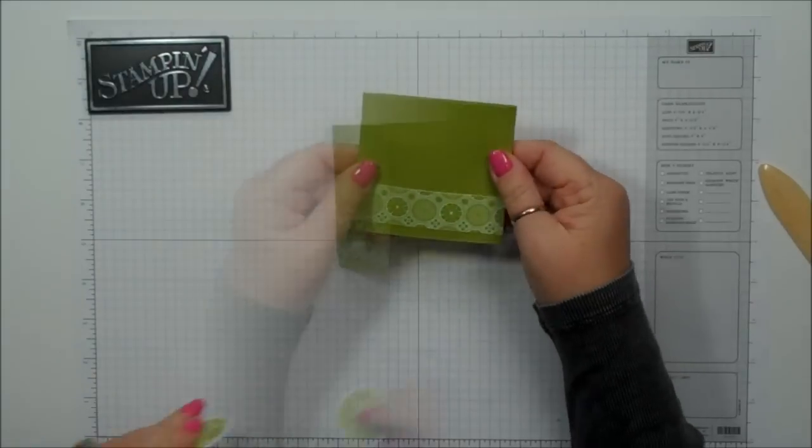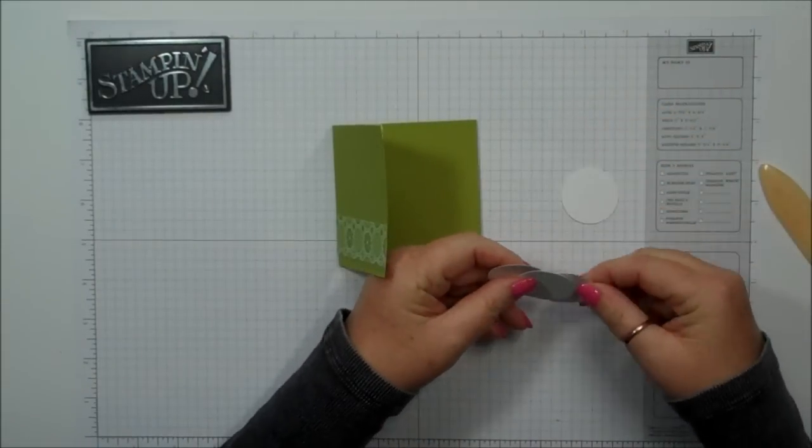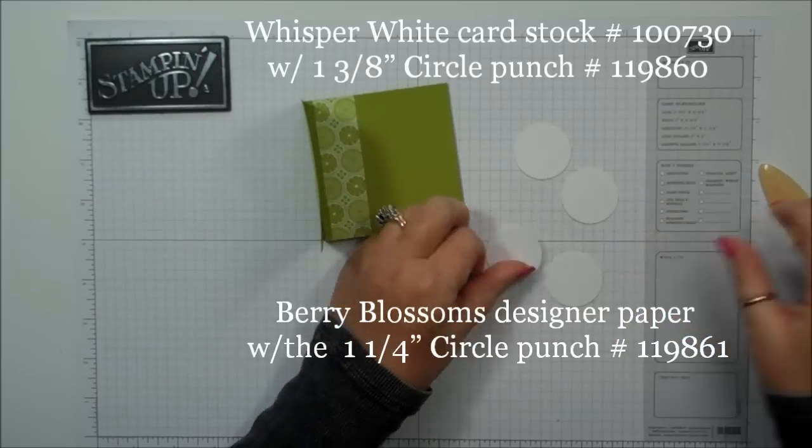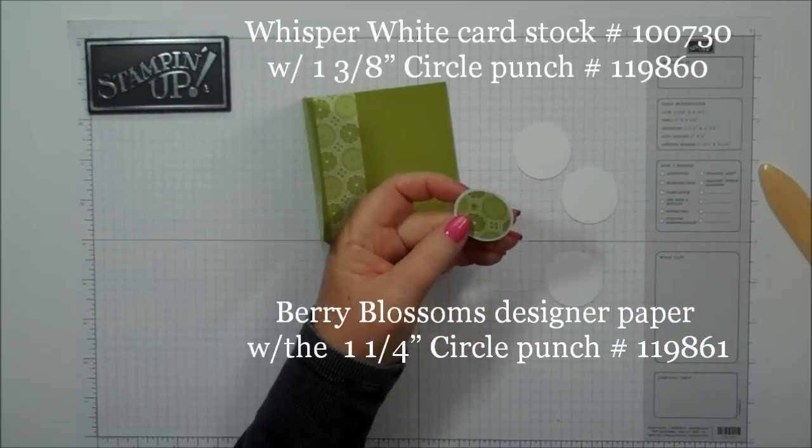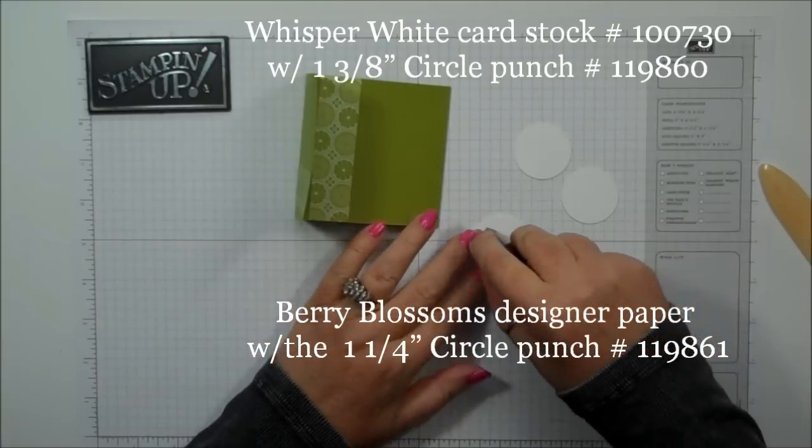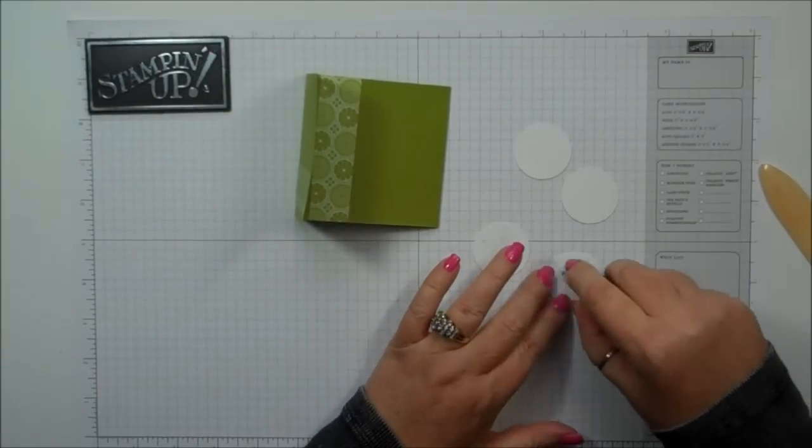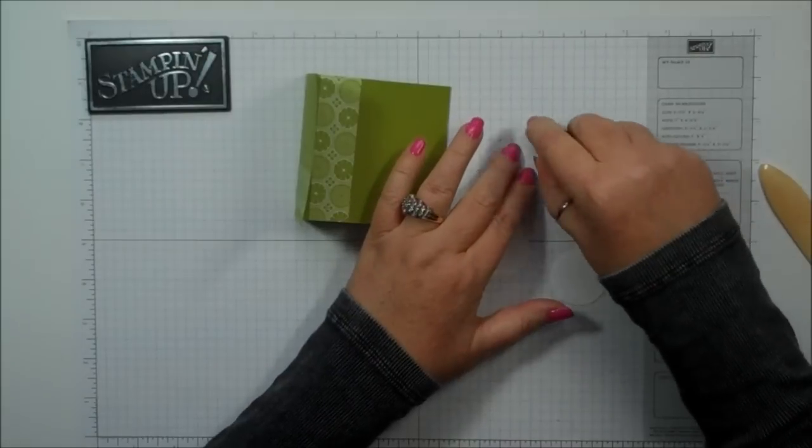Okay, so there's your tri-fold card. So then I went ahead and punched out the Whisper White with the 1 3/8 circle punch and the Berry Blossoms Designer Paper that matches with the 1 1/4 circle punch. I'm just going to layer these.